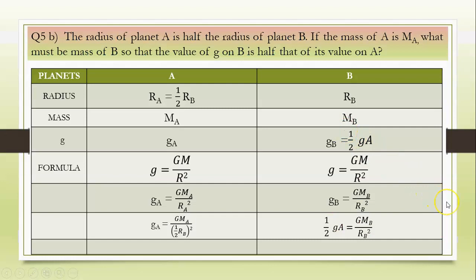The radius of planet A is half the radius of planet B. If the mass of A is MA, what must be mass of B so that the value of g on B is half of its value on A. Students, when we read such kind of sums, it would become simpler when we write it in a tabular form. You can see for both planets A and B, the values radius, mass, g has been written. According to the sum, the radius of A is half of radius of planet B.